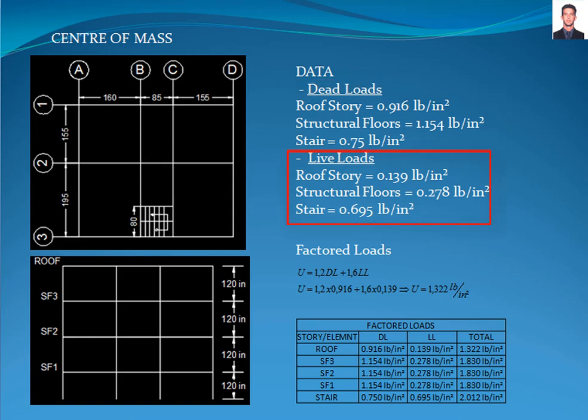The live load for the roof story is 0.139 pounds per square inch, for structural floors 3, 2, and 1, 0.278 pounds per square inch, and for the stairs 0.695 pounds per square inch.